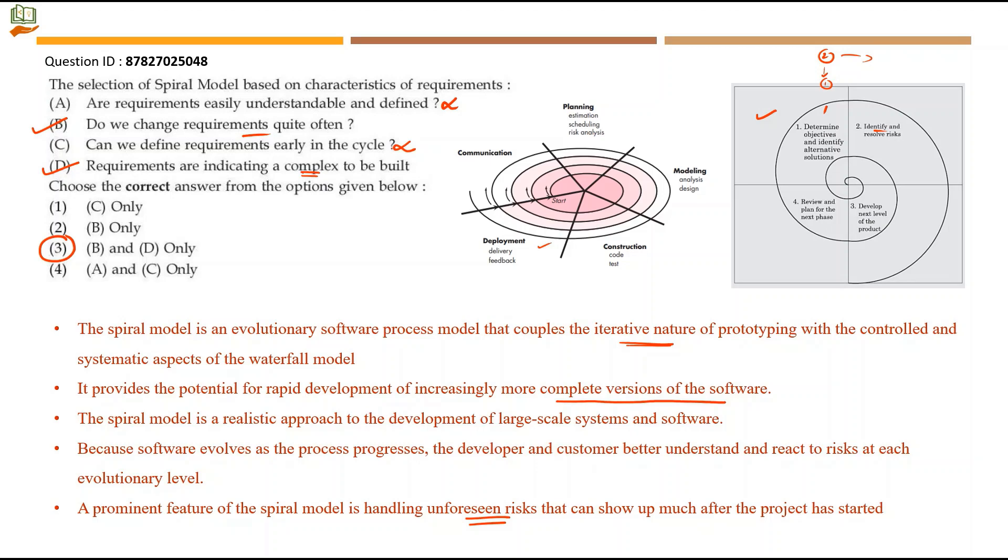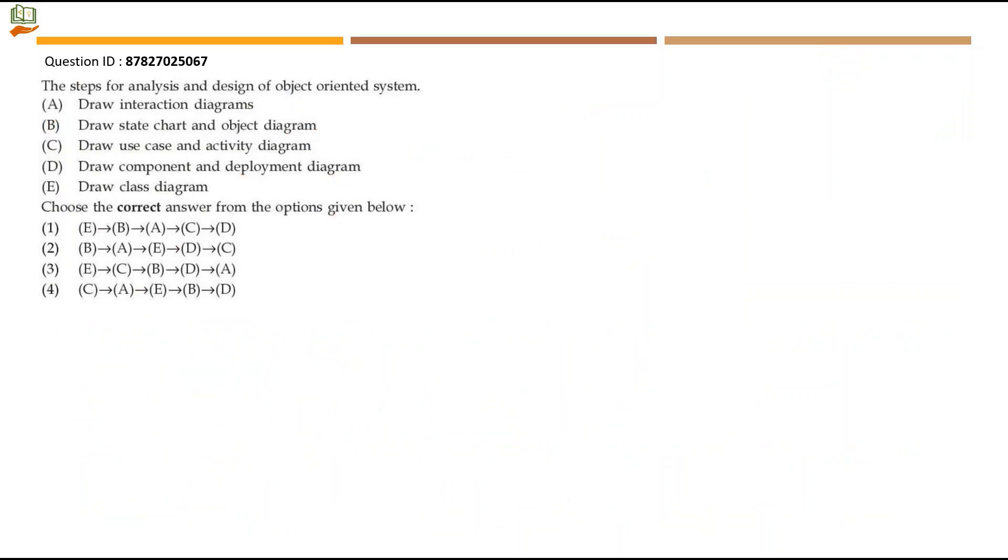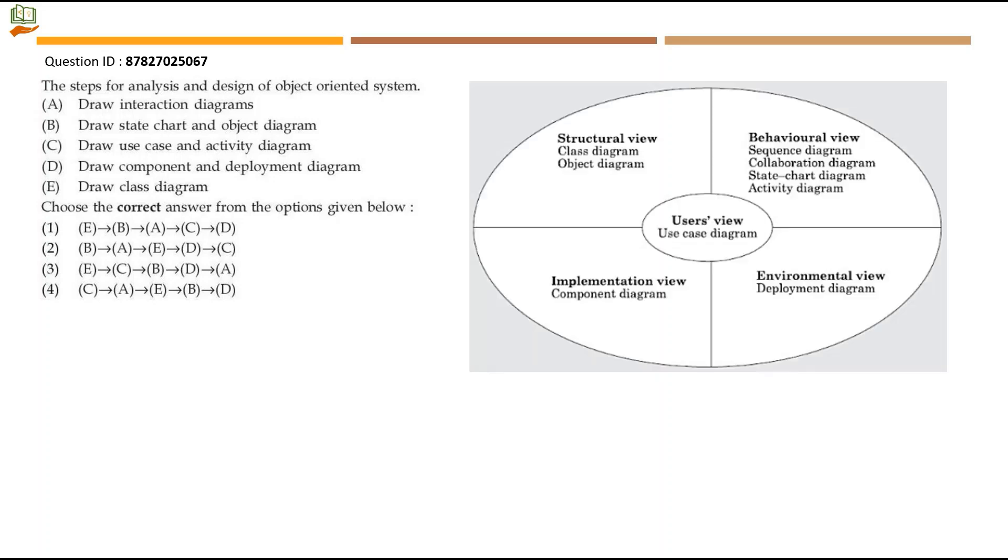Next question: The steps for analysis and design of object oriented system. First let's look at all the diagrams together. Usually we start with the user's view which is at the center of the diagram here. So we have 4 kinds of views apart from the user's view, and whatever diagrams that are coming under those views are listed. Have a note of it. Now we will get into solving the question.